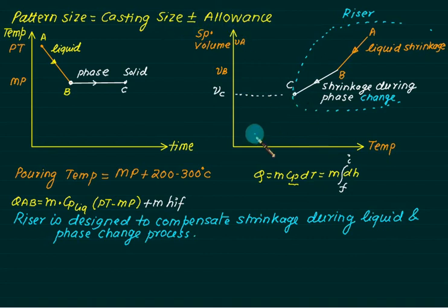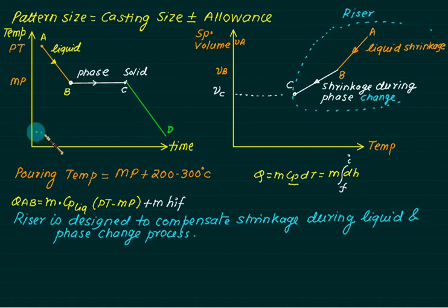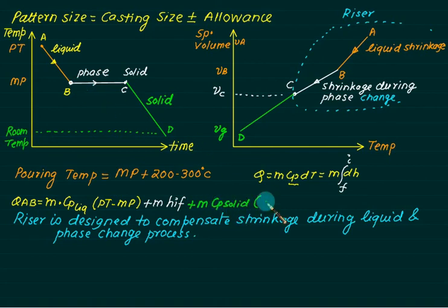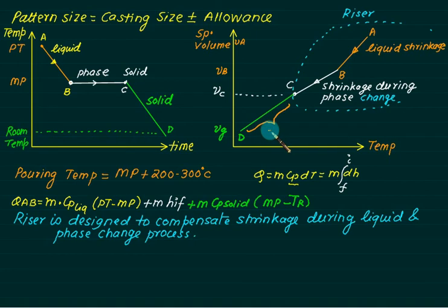Allowances are only provided after the phase change. Now we have a solid. We have the melting point — also called the freezing point — and it will cool down to room temperature. During this solid phase, the volume is further reduced to point D. This is a single-phase process, so it is sensible heat, and we can use m·Cp·dT with the solid-state Cp, multiplied by melting point temperature minus room temperature. This portion is compensated by the pattern allowance — specifically the shrinkage allowance.